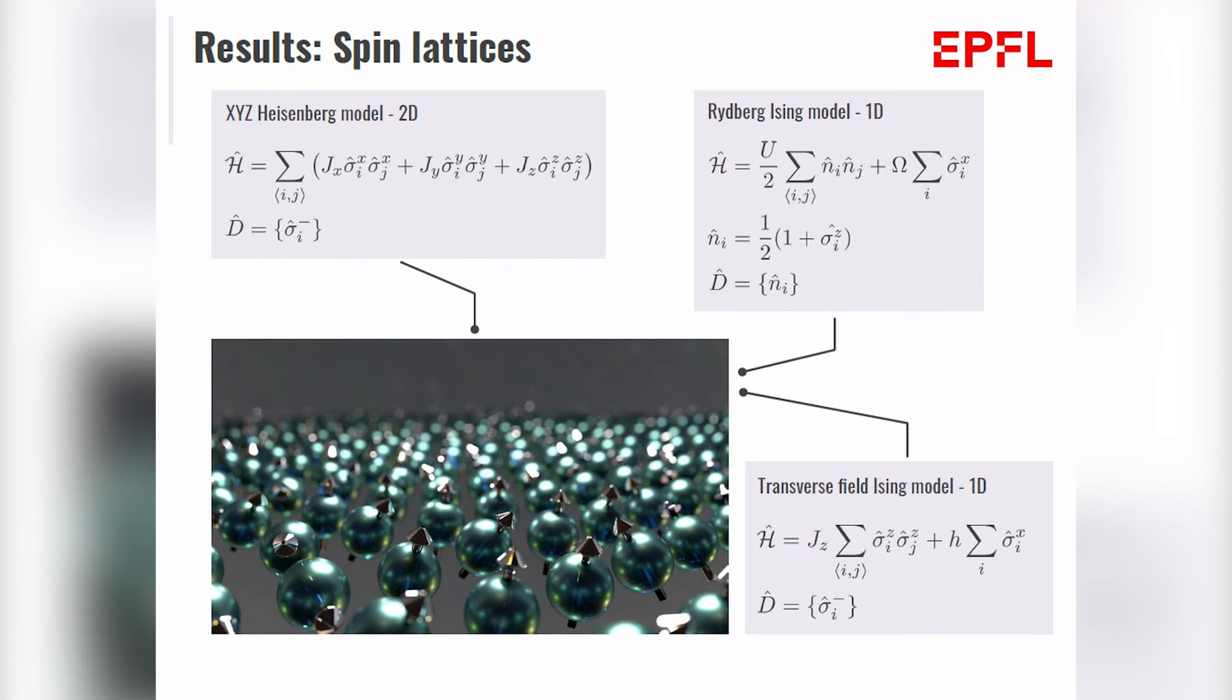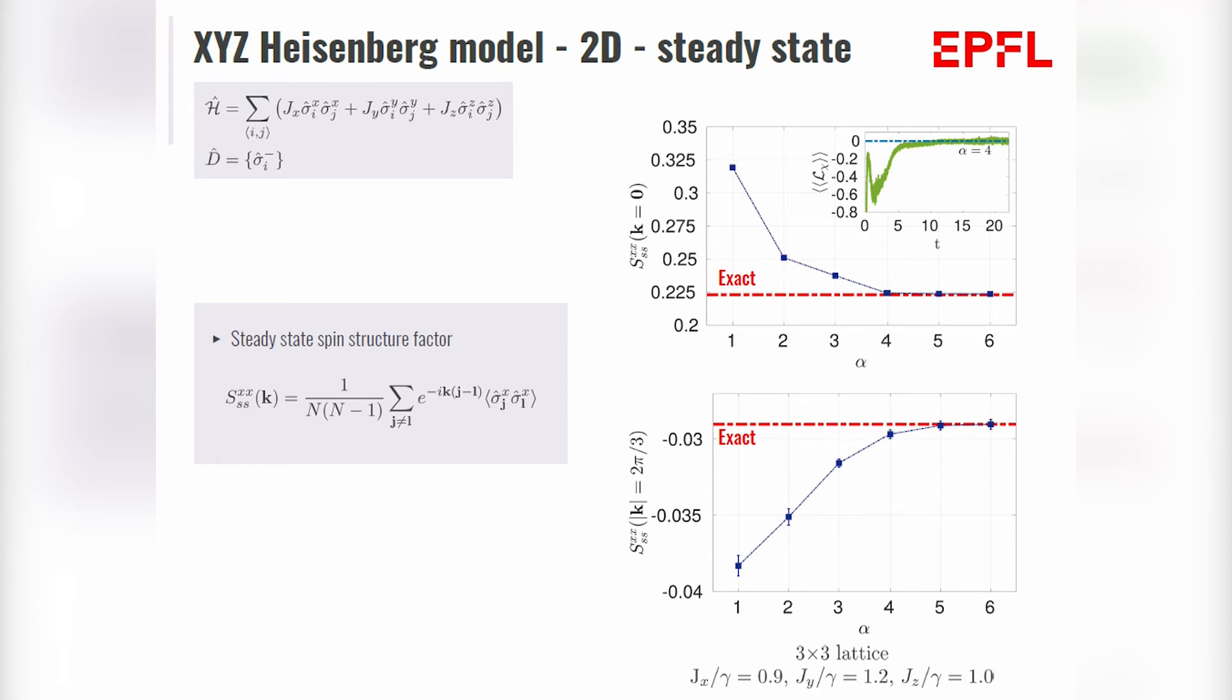So let's start with a two-dimensional Heisenberg model. What I'm showing you here is an observable, a spin structure factor. Let's just not look at it for now, it's just an observable. What I want you to see is that I'm plotting it as a function of my hidden node density, and this is the exact result. And just as we expected, if I increase the number of hidden nodes, my value at steady state converges to the accurate result. So from now on, every plot I show you will already went through this benchmark test and we checked if we saturated in accuracy or not.